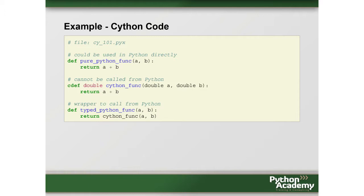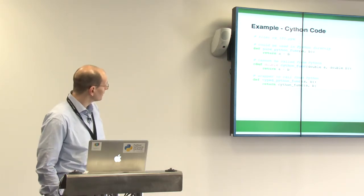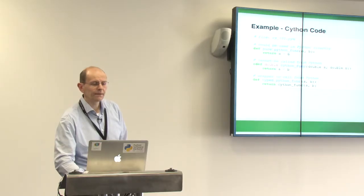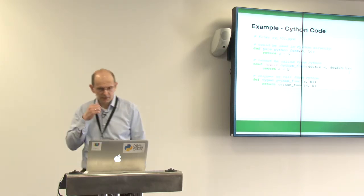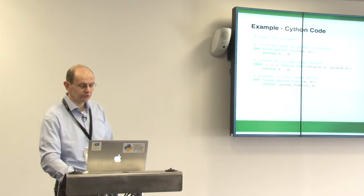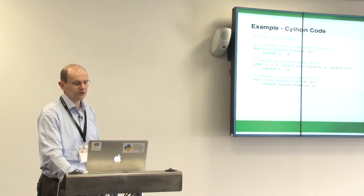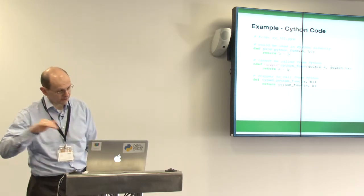Then you can do something called CDEF. The CDEF is a function that is a real C function — there are a few additional keywords in Cython, and one of them is CDEF. A normal Python function would run in Python with no problem, but a CDEF function would not — it's only available from C and you have to write a wrapper around it. You specify the return type as double and that A and B are doubles — really C doubles. To use it, you write a Python function that calls this C function. That's most of the work: specifying the types.